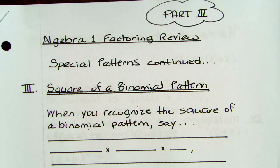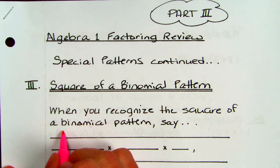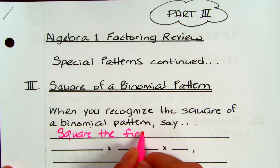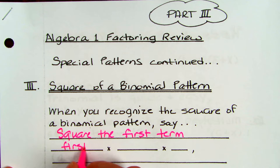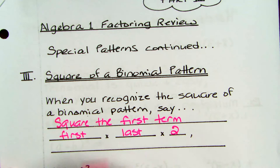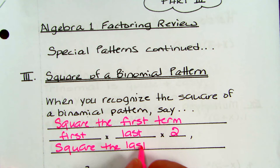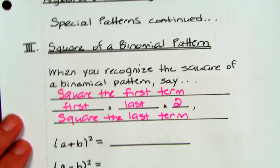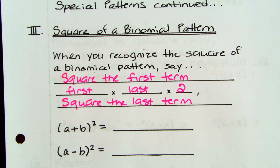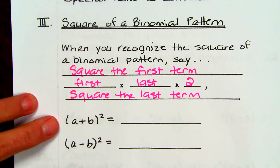This is factoring part 3, covering the second special pattern. We're going to look at the binomial pattern. When you have a square of a binomial, you're going to say to yourself: square the first term, then first term times the last term times 2, and then square the last term. Each of those three phrases gives you a term. These are basically the formulas or guidelines — what might have been in your Algebra 1 book.